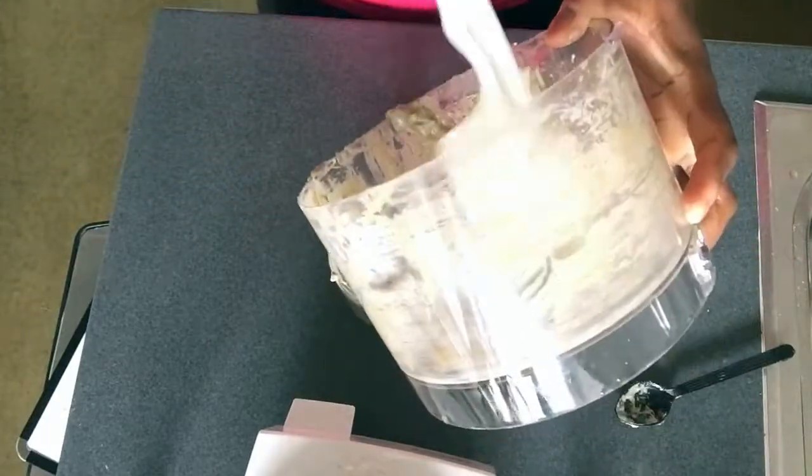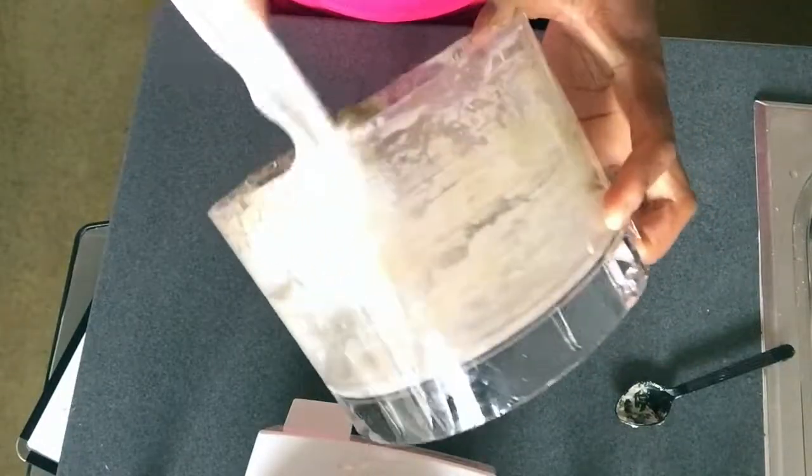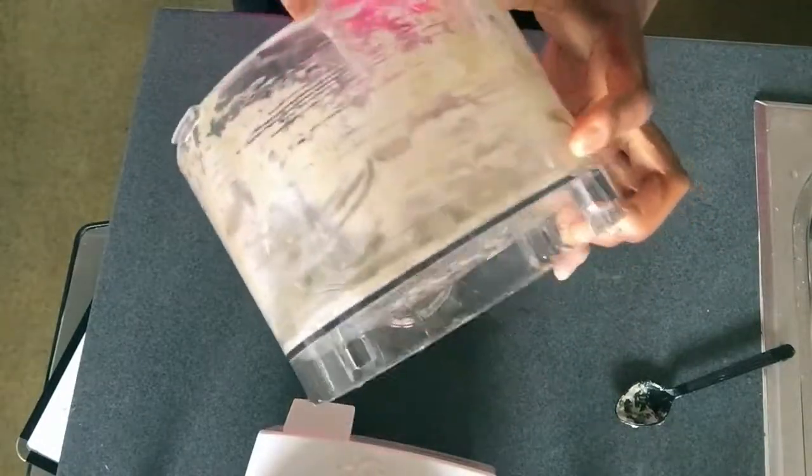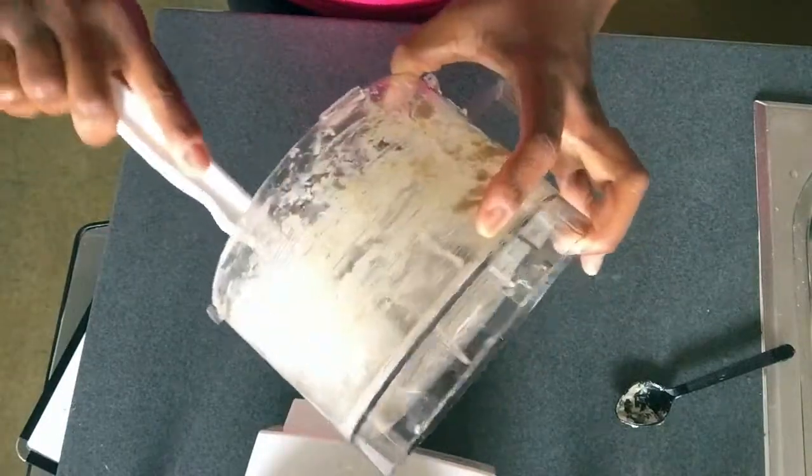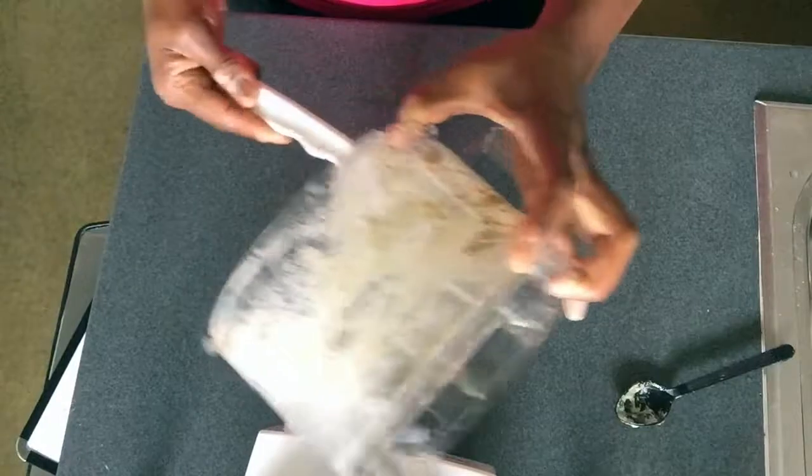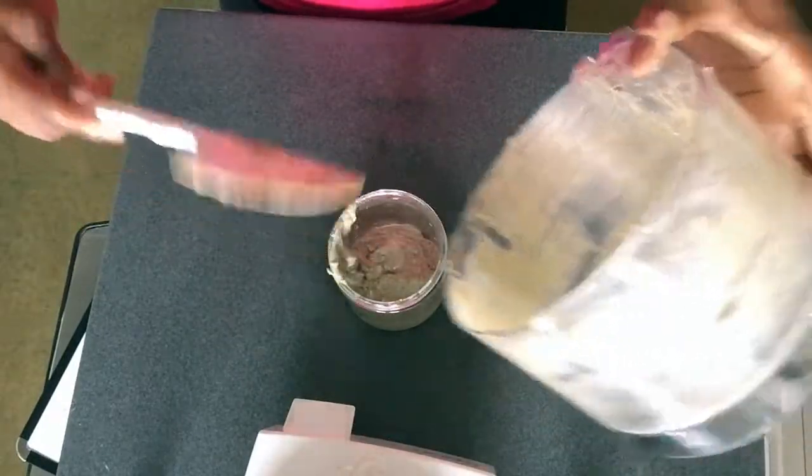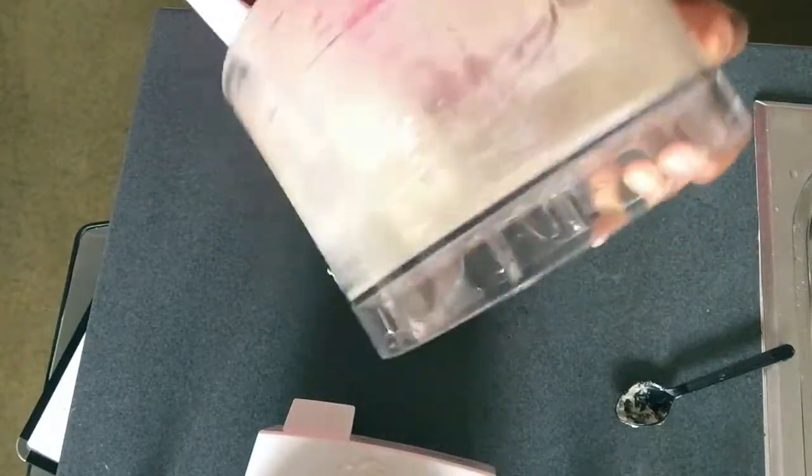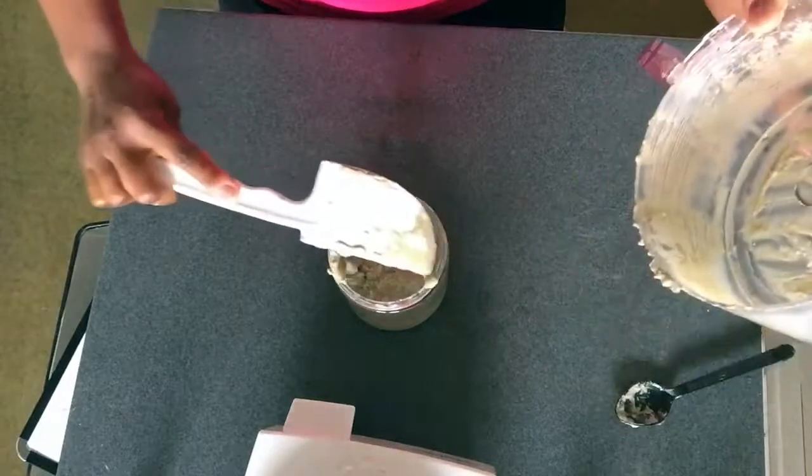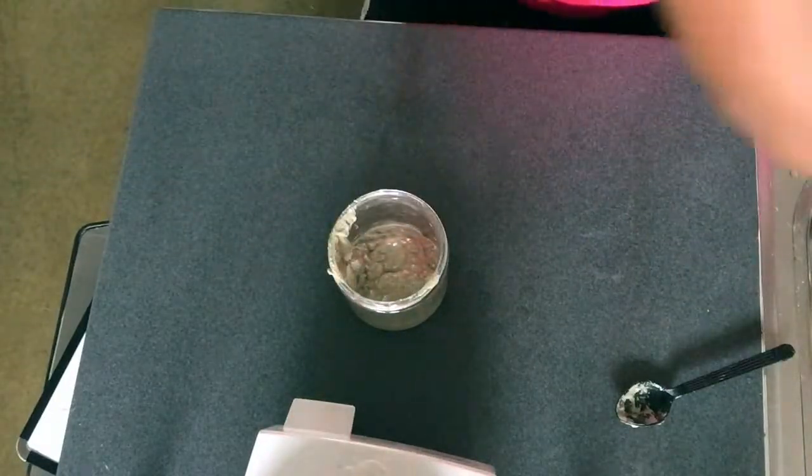I'm just using a spatula here, putting it into this glass container. Again, if you wanted a tad bit smoother, definitely use a smaller food processor. I don't have a smaller one, but that would definitely help to make this a tad bit smoother. And use the metal blade and then just mix in the clay later. I just opt to not do that because I don't feel like taking the extra step.